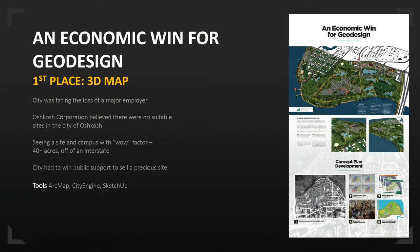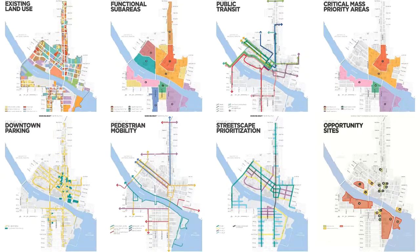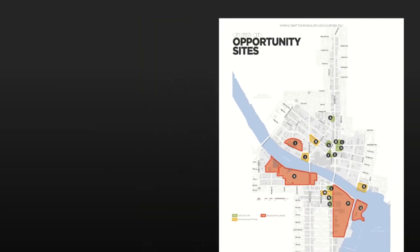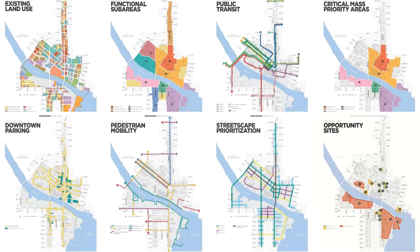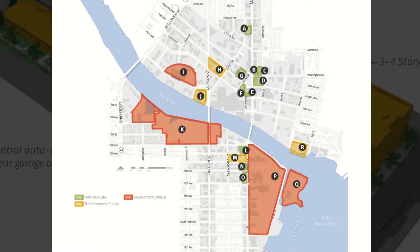The first one — 'An Economic Win for Geodesign' — is where we took a golf course and turned it into a corporate campus. The city was facing the loss of a major employer. Part of what we were hired to do was a downtown master plan, and it included opportunity sites where we highlighted three different types: green sites that would add value if redeveloped, yellow sites as redevelopment priorities — larger, visible, under single ownership — and red catalyst sites that the city should focus on developing. These are the types of sites where if they develop, they're going to start generating development around them.